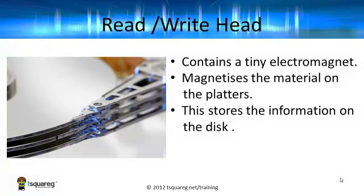We've got a close-up of the read-write heads, and you can clearly see that they exist above and below each platter, which means that they're going to be writing data to the same corresponding position on each platter — which is very important when it comes to talking about cylinders. The read-write head itself contains a tiny electromagnet which magnetizes the material on the platters, and this is the technology behind the storage of data on an HDD.